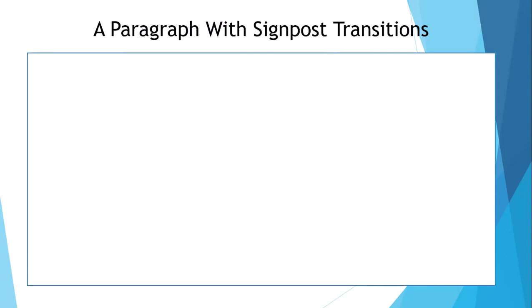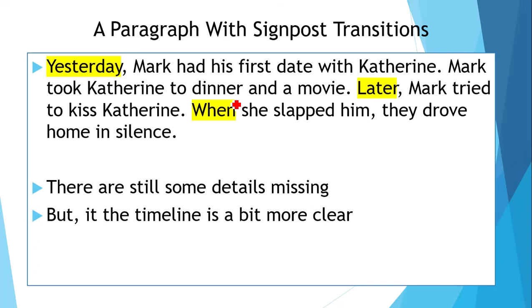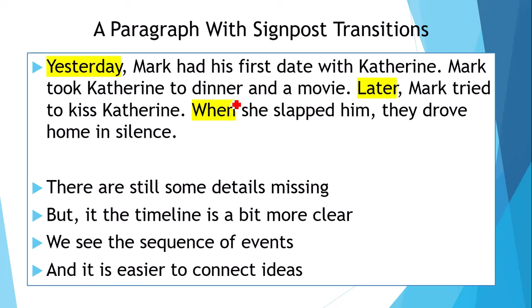Here's a paragraph we looked at last time. This is our second draft, meaning the first draft didn't have any of these yellow words — we've now added signposts. Yesterday, Mark had his first date with Catherine. Mark took Catherine to dinner and a movie. Later, Mark tried to kiss Catherine. When she slapped him, they drove home in silence. All of these are chronological words: yesterday, later, and when. The timeline is a bit more clear, and it is a little bit easier to connect ideas, but it's not quite all the way there.